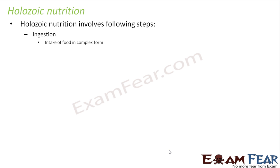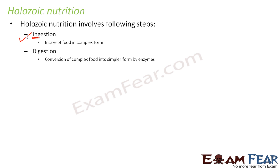The first step is ingestion – the intake of food in complex form. Whatever the food may be – chow mein, dosa, rice – we take that food in. That intake of food is called ingestion. Next is digestion – the conversion of complex food into a simpler form by enzymes. Enzymes are substances present inside our body that facilitate the chemical reactions taking place within it, helping to convert complex food into a simpler form.